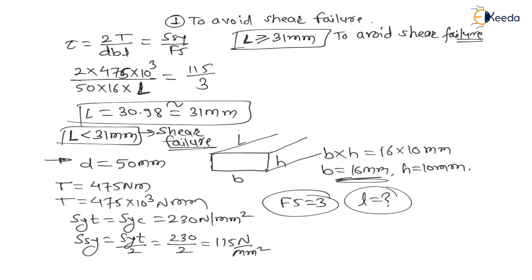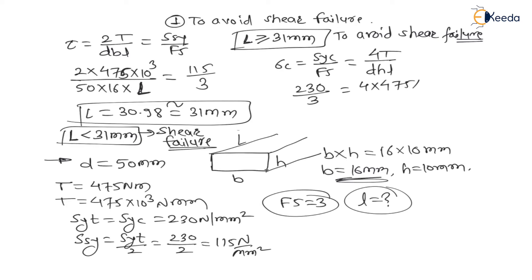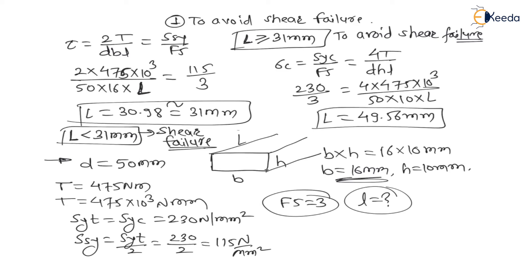Now let us check for crushing failure. The crushing stress equals Syc divided by factor of safety, and from the derived formula this equals 4T divided by DHL. Substituting values: 230 divided by 3 equals 4 × 475 × 10³ divided by 50 × 10 × L. Solving, the length of key is 49.56 mm as per crushing strength.